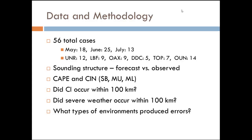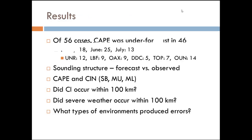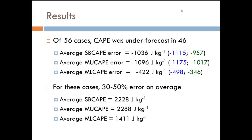A few other things I did consider: did convective initiation occur within 100 kilometers? Did severe weather occur within 100 kilometers? And overall, what I really wanted to know was what type of environment was producing errors when there were errors.